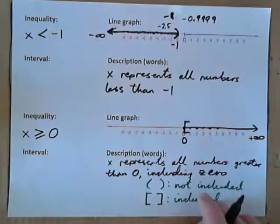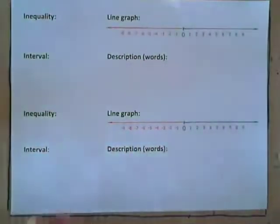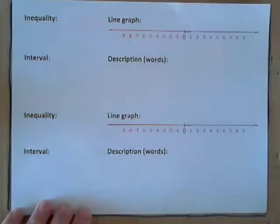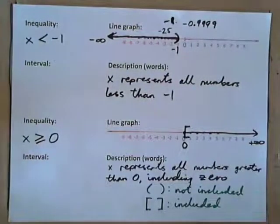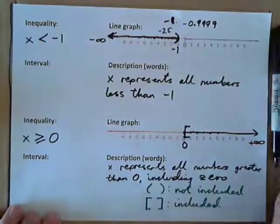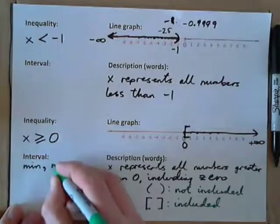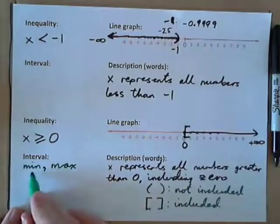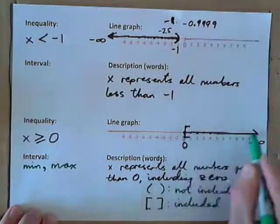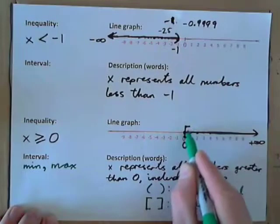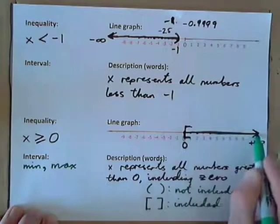So, let's figure out intervals now. An interval is always in this form: min, comma, max — the minimum number in the set, comma, and then the maximum number in the set. If we have a look at this example — this line — the line graph is usually the easiest thing to figure out, so always work on that. This is showing all numbers from 0 to positive infinity, and all the numbers in between.